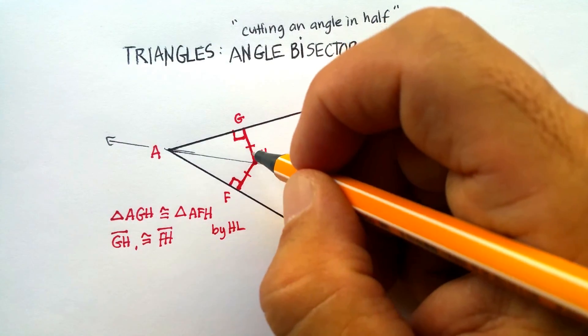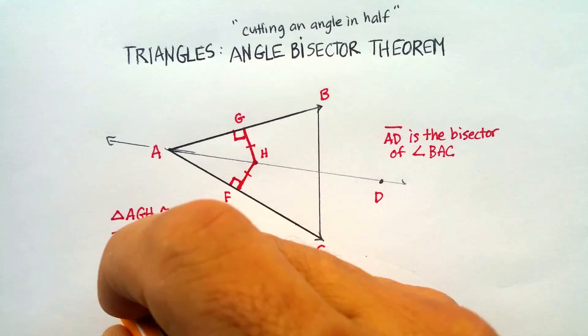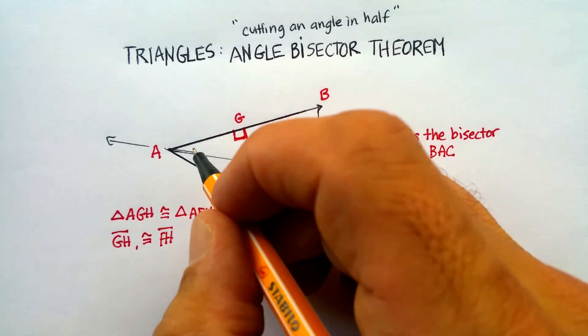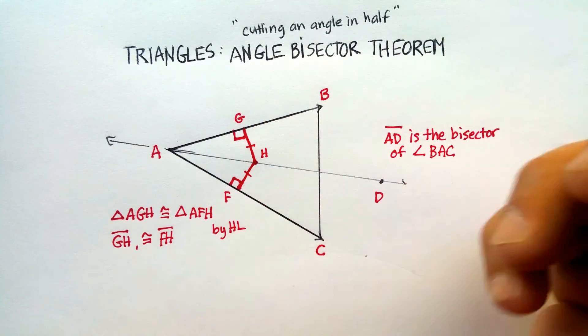And then finally, these, like I said, are equidistant. So G-H and F-H are basically the same distance, which makes everything else in these little triangles the same distance.